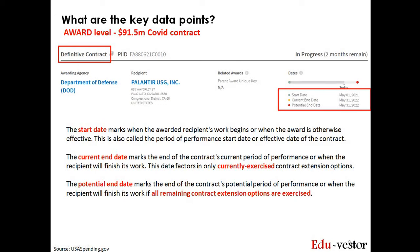Moving on to another definite contract. You can see this is another DOD award with two different end date definitions. Current end date refers to the end of contract once the currently exercised work is completed. If only the base contract is required without exercising the options, this current end date is likely to be before the potential end date, which is the latest date assuming all options are exercised and Palantir is required to do additional work beyond the base requirements. In this example, both dates are the same as the options have been exercised and the award is near completion — you can deduce this from the transaction view, which I will show you later.